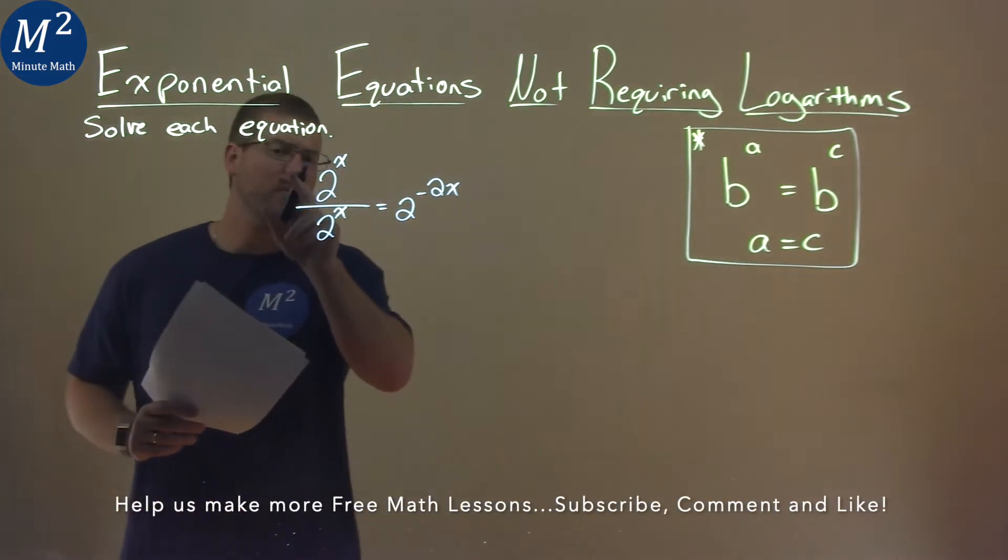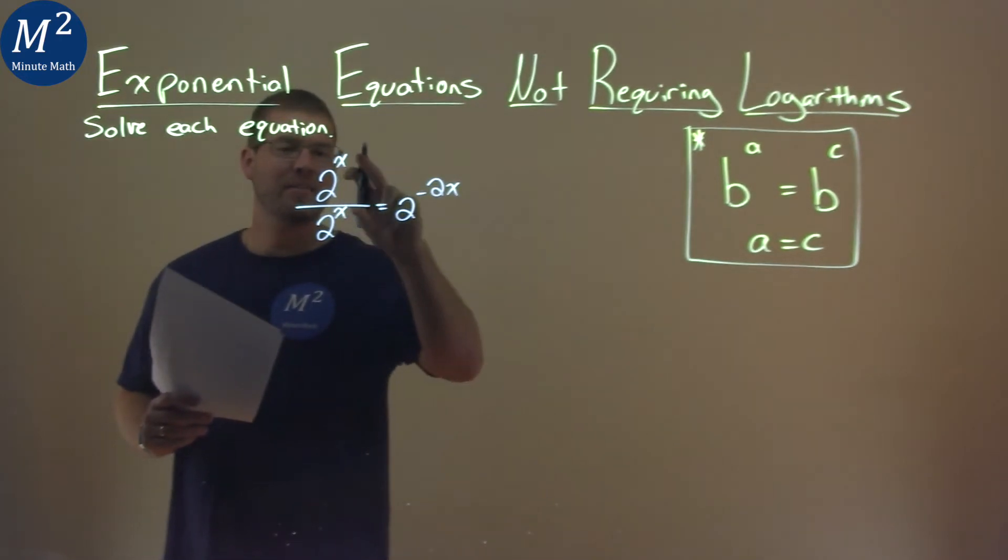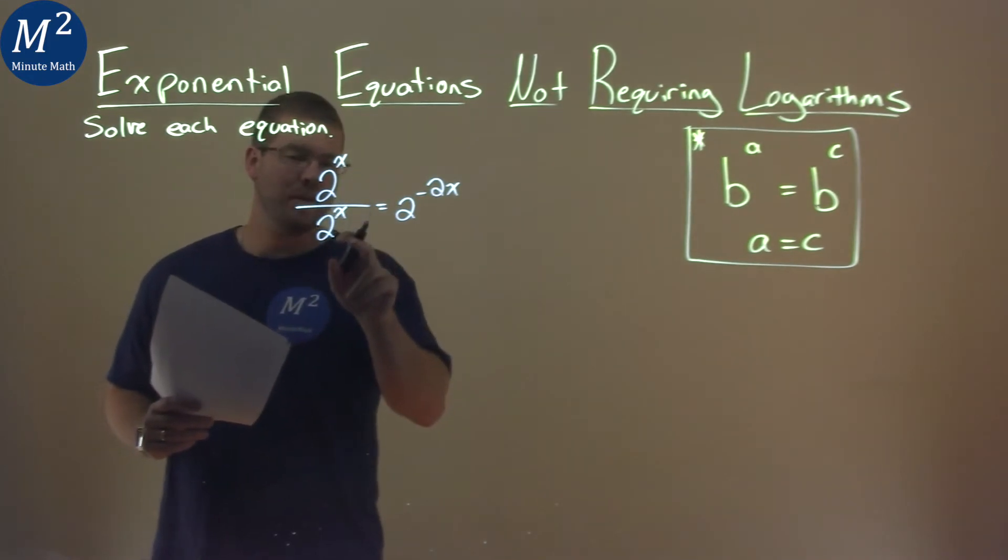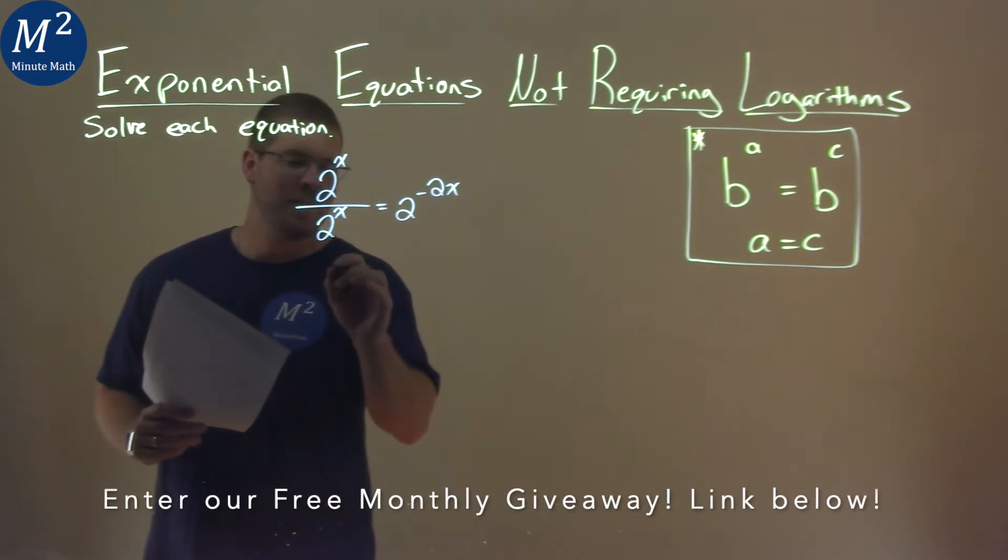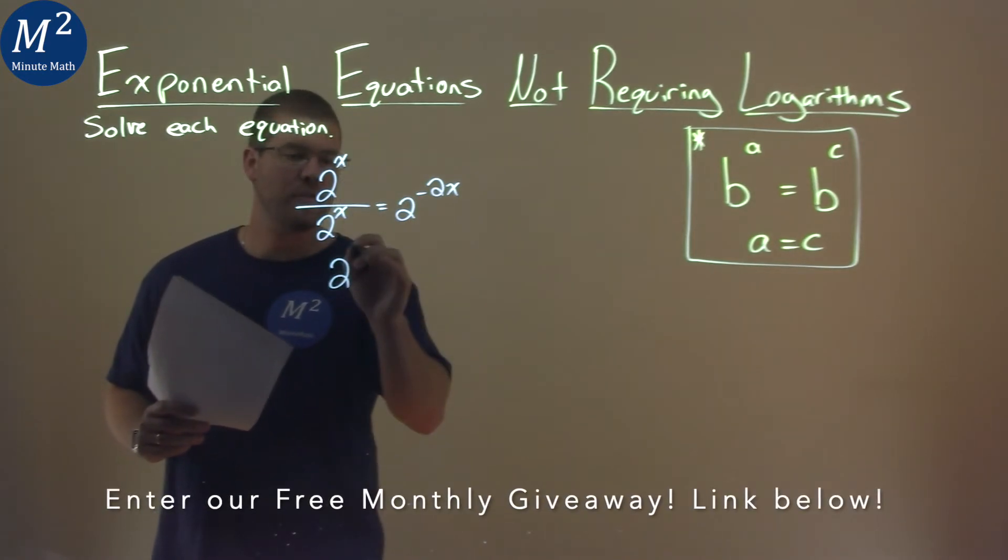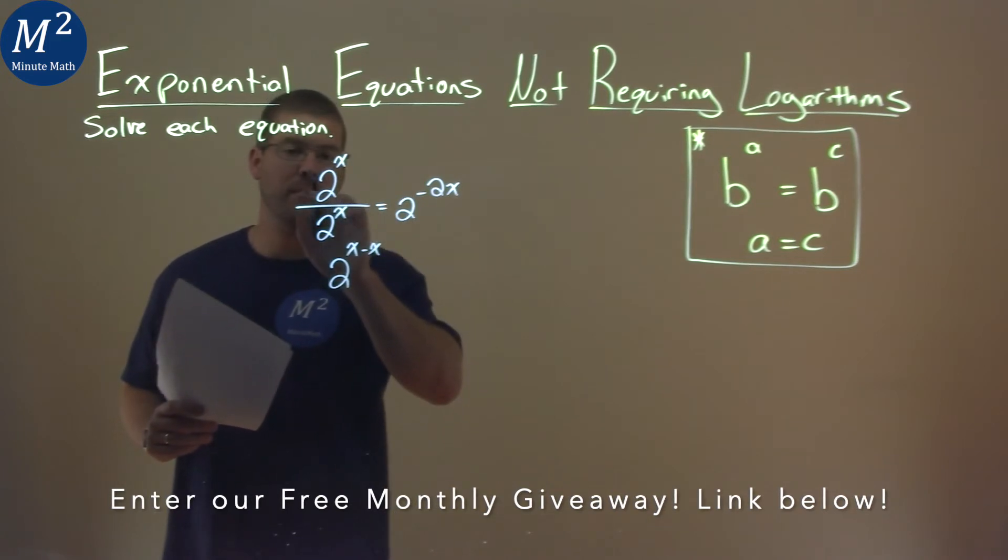Our rules with dividing problems here, or dividing with the same base and exponents - if we have the same base, we subtract the exponents. So it's 2 to the x, the first exponent, minus the x. We subtract the exponents when the bases are the same.